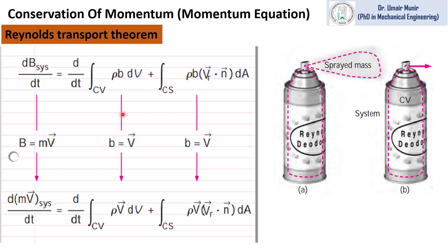In this video, we will derive the conservation of momentum equation by using Reynolds transport theorem. This is the general form of Reynolds transport theorem. I have explained the Reynolds transport theorem and its derivation in my previous video. The Reynolds transport theorem relates the change in the properties of a system to the change in properties of a control volume.